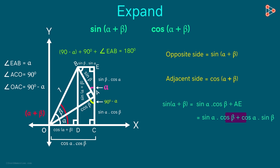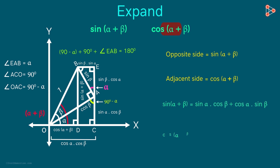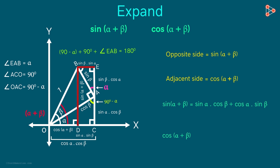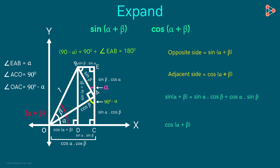We've found sin alpha plus beta. Now, cos alpha plus beta is this length minus this length. We know this length is sin alpha sin beta — because these two sides are equal; they are opposite sides of this rectangle. So cos alpha plus beta equals cos alpha cos beta minus sin alpha sin beta.